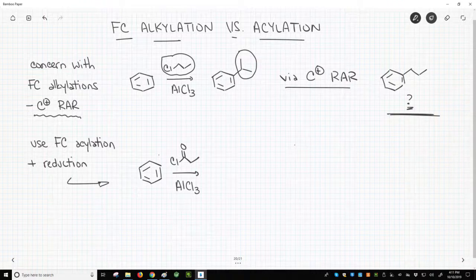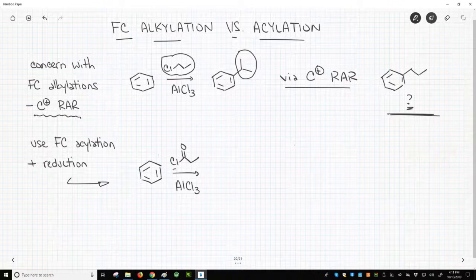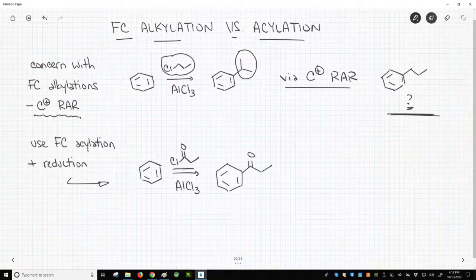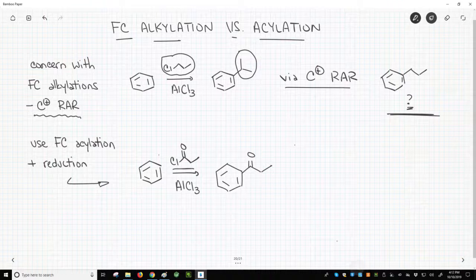How would we do that? An option would be to add a three-carbon acyl group to the ring through the Friedel-Crafts acylation. The product of this reaction is not propylbenzene, but at least we have a three-carbon chain on the ring.